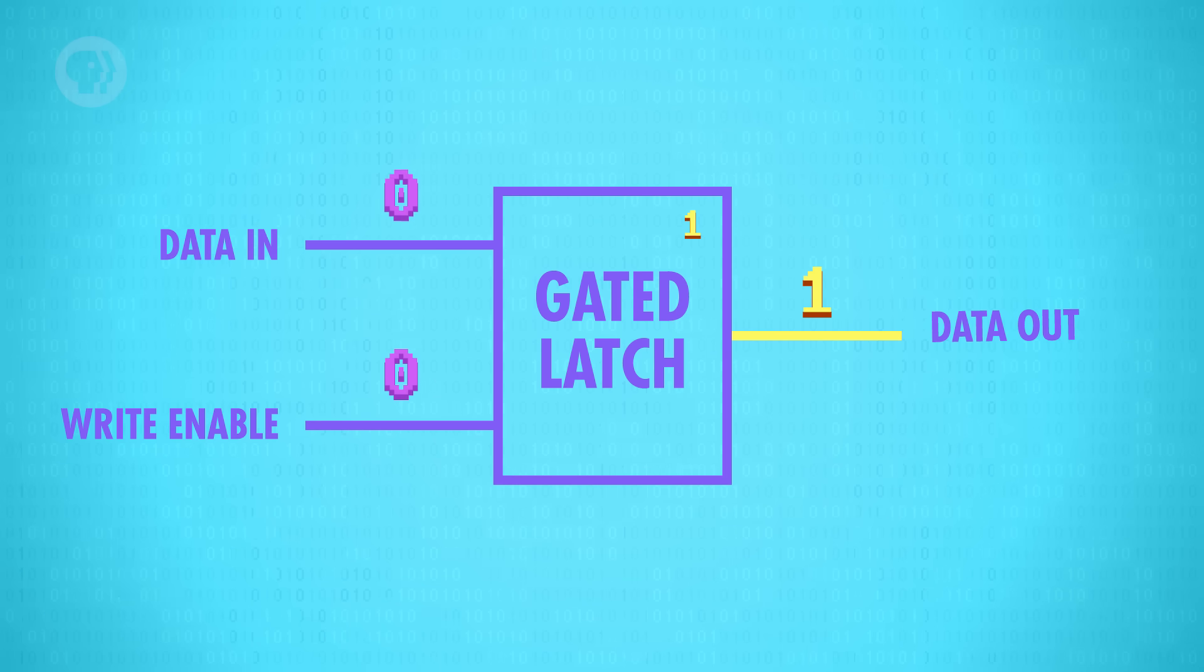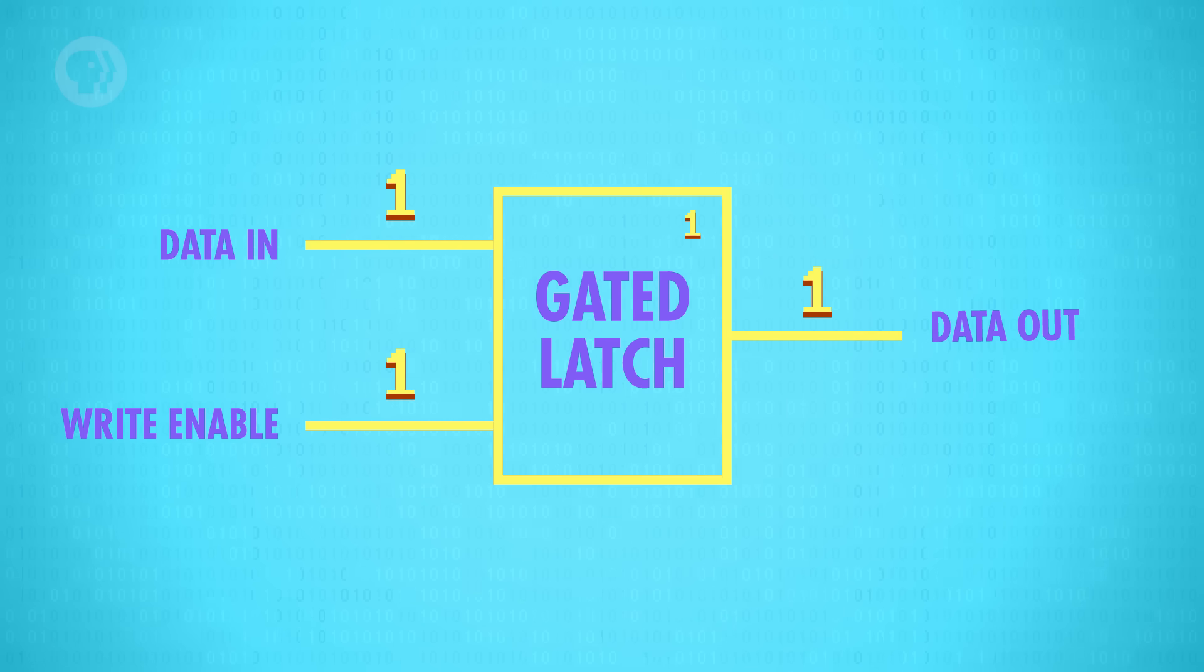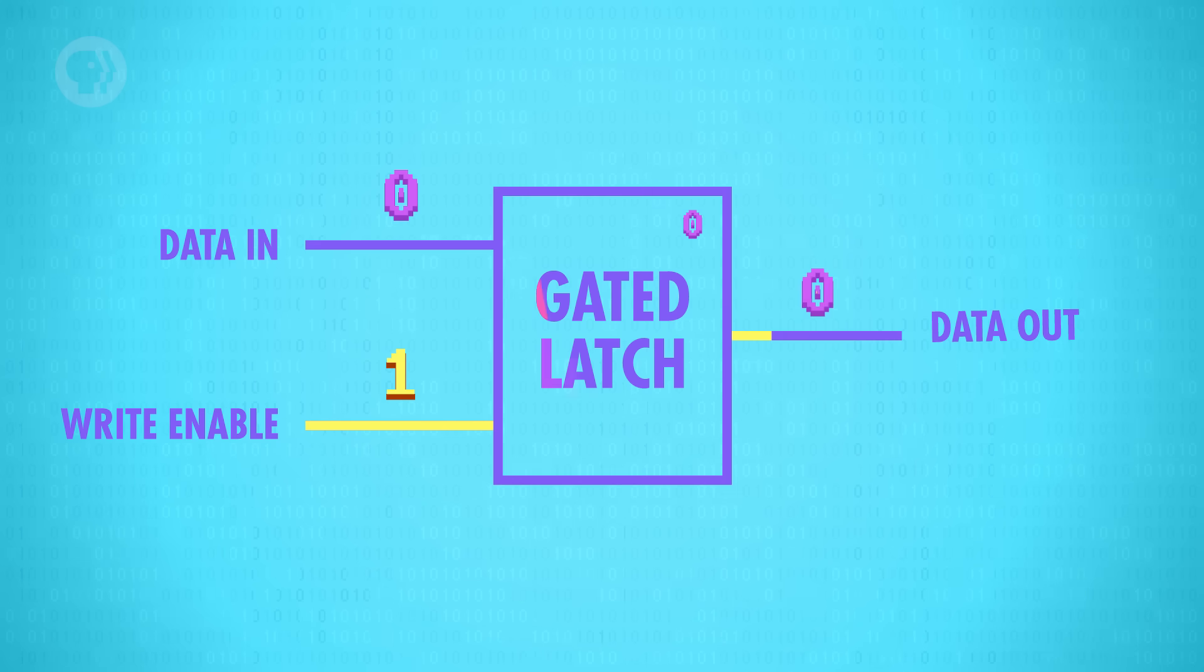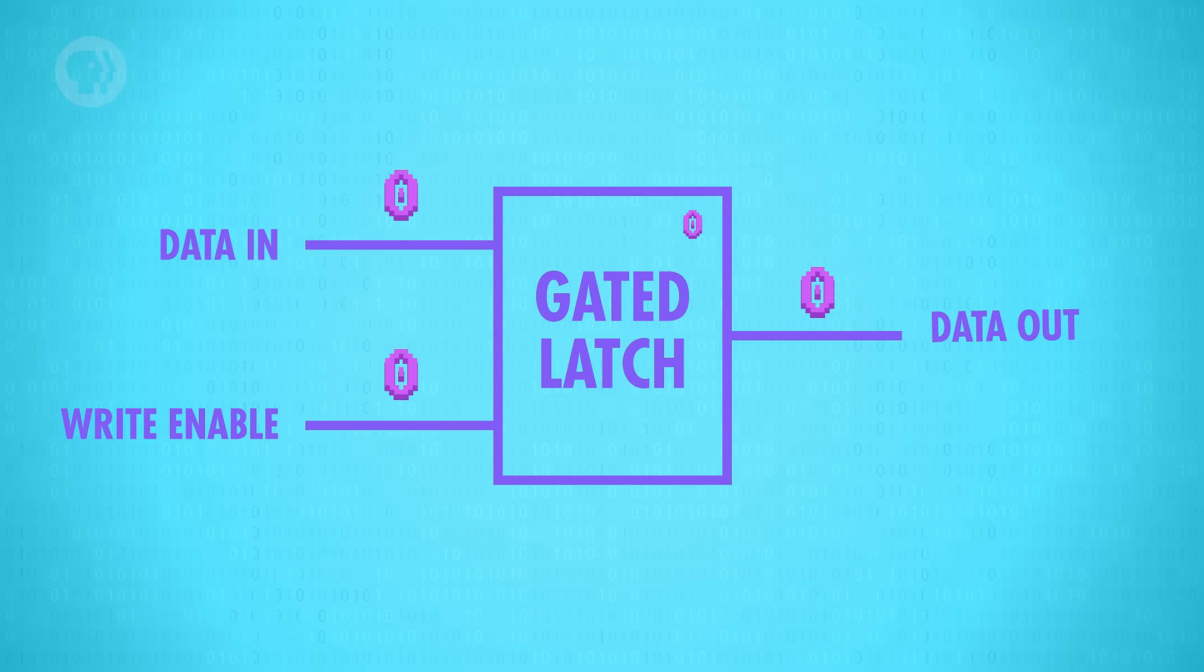Once again, we can toggle the value on the data line all we want, but the output will stay the same. The value is saved in memory. Now let's turn the enable line on again, and use our data line to set the latch to 0. Done. Enable line off, the output is 0, and it works.